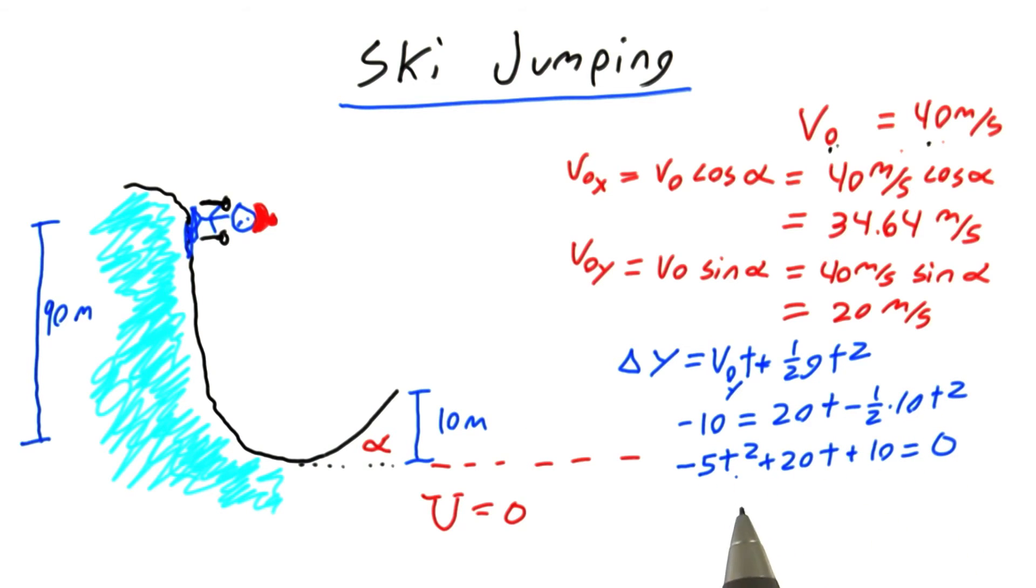It doesn't look like I can factor this quadratic equation, so I'll have to use the quadratic formula. Plugging these numbers in, I get two solutions: time equals negative 0.45 seconds and time equals 4.45 seconds.